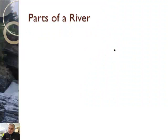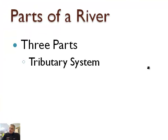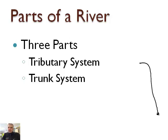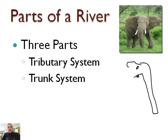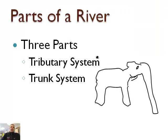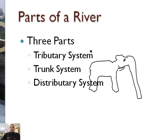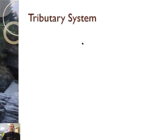Let's move on and talk about the parts of a river. It turns out there are three parts to a river. One is called the tributary system. Two is called the trunk system — and don't confuse that with an elephant's trunk. And third, it's the distributory system. So let's learn about these three parts.